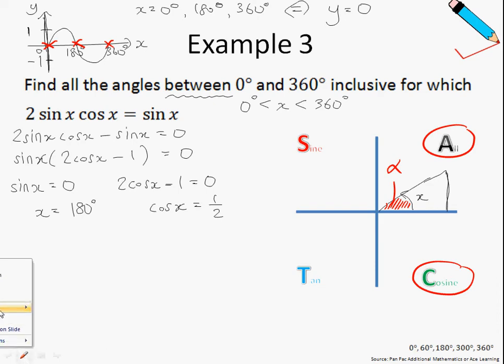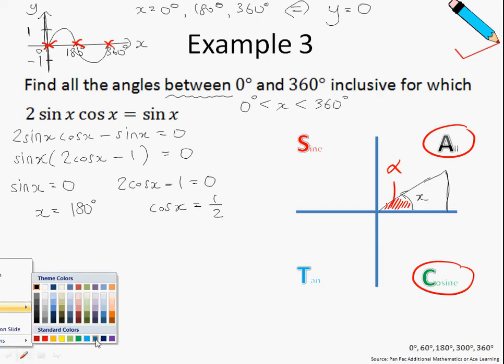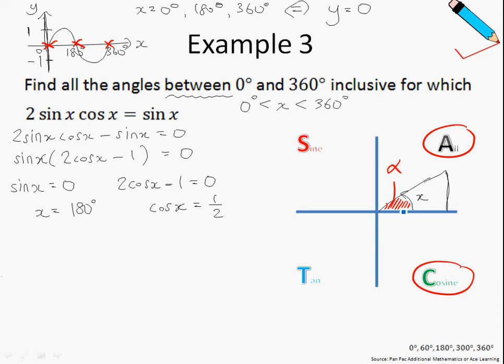How about the other scenario, where x is in the C quadrant? x will be measured in this direction, all the way here. This is my x. In the second scenario, this is my alpha.